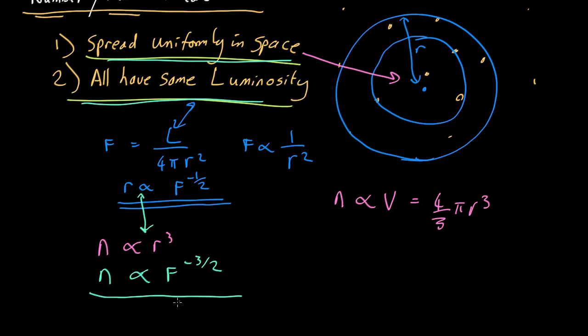Now as we saw in the plot, that's actually not what we get. We have number versus flux, and here's the minus 3 halves power as a log plot, and here's what we actually observed. So it's not fitting that curve, so one or other of these two assumptions must be invalid.